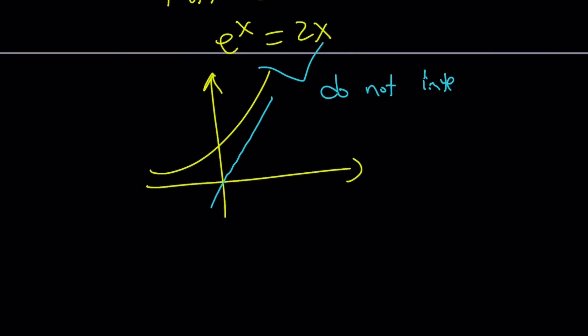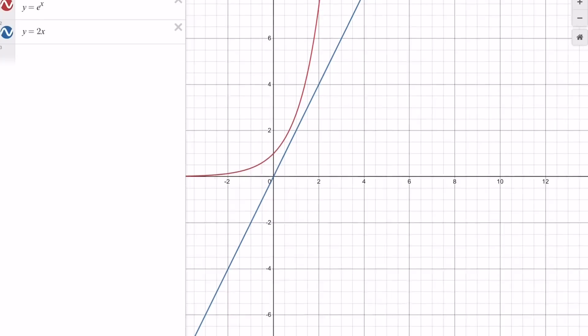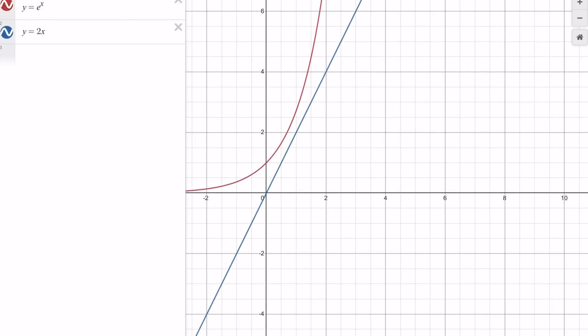You can definitely check this with Desmos. Let's go ahead and take a look at Desmos and see why they do not intersect. As you can see in this graph, these two functions do not intersect. And since e to the power of x is exponential and it's going to grow much faster, if they didn't intersect here, they will not intersect anywhere else.